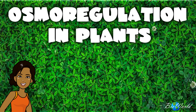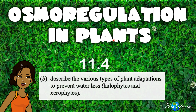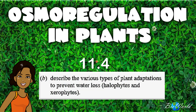Hi there. BioWorld is back and in today's episode, I'm going to be explaining osmoregulation in plants. This is from subtopic 11.4 of the STPM Semester 2 syllabus, part B, where I'm going to describe the various types of plant adaptations to prevent water loss. The plants I'm going to discuss are halophytes and xerophytes. So come join me.